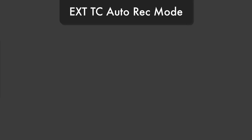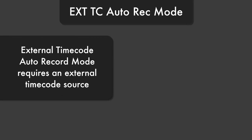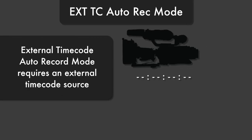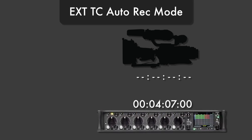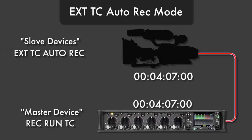External timecode auto record mode is essentially the same thing as external timecode mode, but designed to be paired with a master device using record run timecode mode. In this mode, timecode is used to automatically start and stop record mode on the slave device.